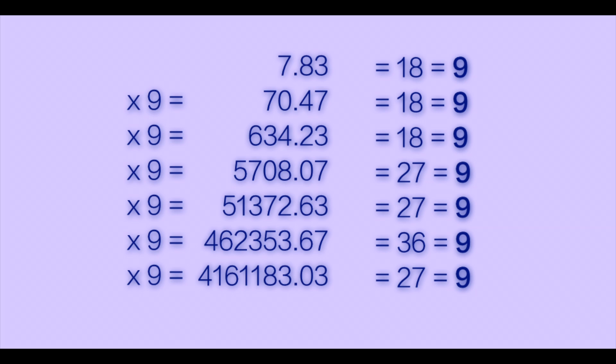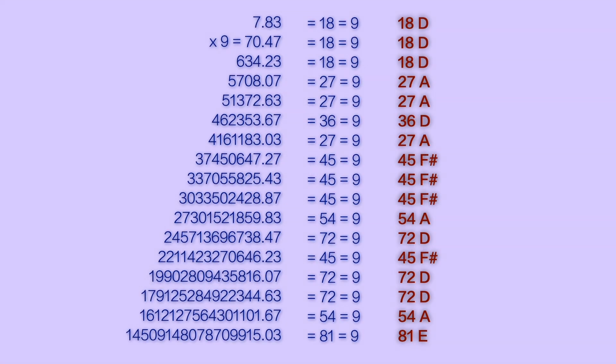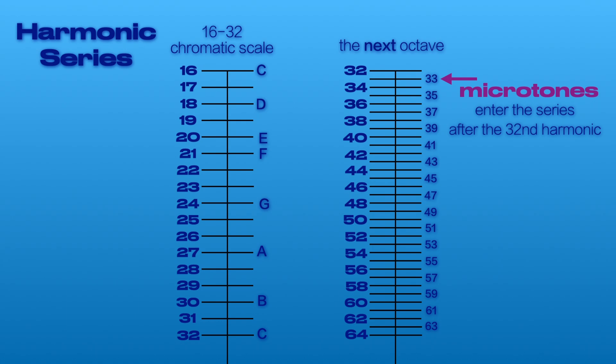If we iterate the times 9s out farther, we see repeats of the harmonic values of D and A, but in the 7th iteration we get a value of 45, and in the 16th iteration a value of 81. And though they both reduce to 9, these aren't harmonic values as far as the harmonic chromatic scale is concerned. They're both odd numbers, meaning they would both be brand new harmonics and would be considered microtones because they're generated after harmonic 32.